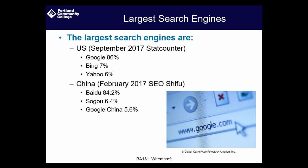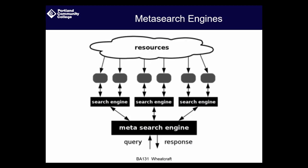Outside the US, the numbers change significantly. In China, Google has only about 5.6% market share, while the big player is a Chinese company called Baidu. China has put restrictions on Google and other companies that have prevented it from gaining a foothold. China is much more involved in censorship and filtering what people see — the filter bubble effect from China's government and Baidu is far more extreme than anything experienced in the US with Google.